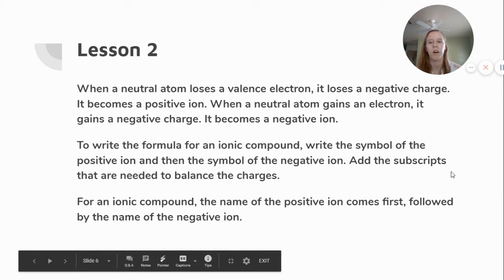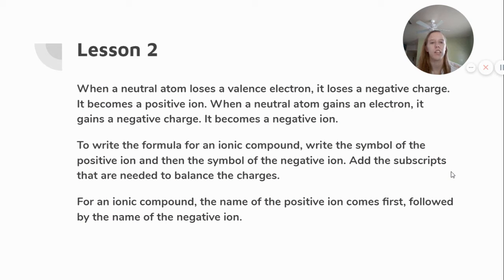From lesson two, our three key question answers: When a neutral atom loses a valence electron, it loses a negative charge and becomes a positive ion. When a neutral atom gains an electron, it gains a negative charge and becomes a negative ion. To write the formula for an ionic compound, write the symbol of the positive ion and then the symbol of the negative ion. Add the subscripts that are needed to balance the charges.